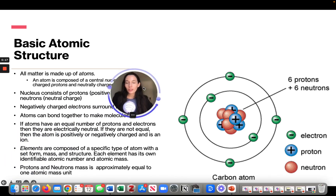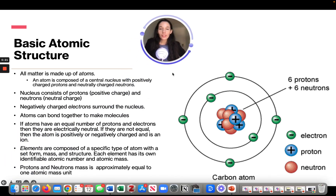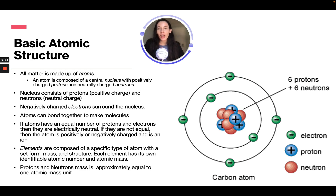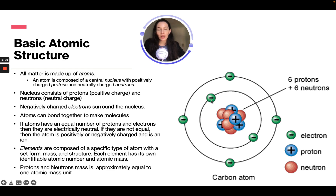Basic atomic structure is based on the fact that all matter is made up of atoms. Everything in this world, whether it is this pencil or the microphone or this piece of paper, is made up of atoms. An atom is composed of a central nucleus with positively charged protons and neutrally charged neutrons. We can see that here with this carbon atom — our nucleus has protons and neutrons, and negatively charged electrons surround the nucleus on orbitals.